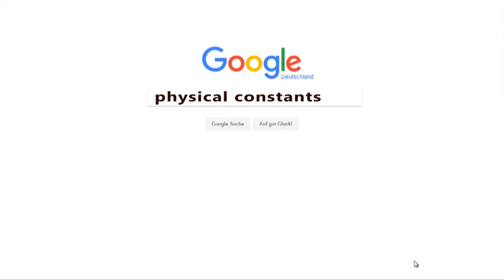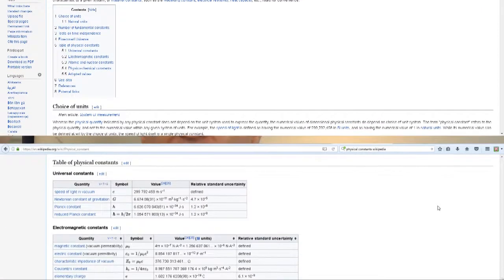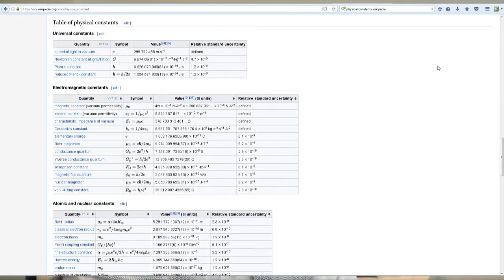All this is possible because of physical laws that are known in the science as physical constants. A quick Google search for physical constants throws up the following facts. There are 37 of these constants, for example the speed of light, gravitation and the fine structure constant.